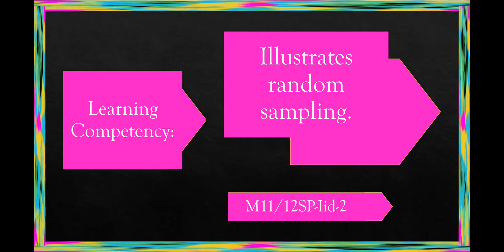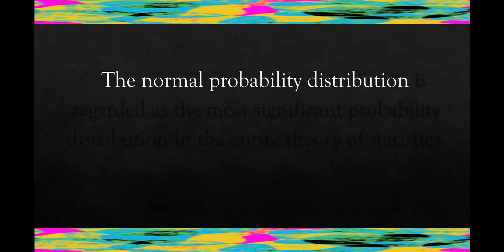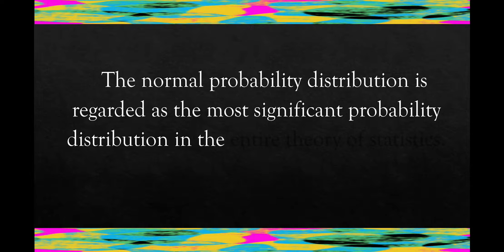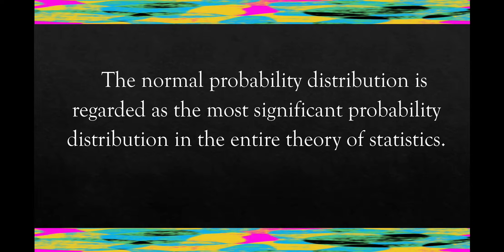In our previous lesson, you have learned that the normal probability distribution is graphically represented by a symmetrical bell-shaped curve known as the normal curve, whose shape is determined by its mean and standard deviation. The normal probability distribution is regarded as the most significant probability distribution in the entire theory of statistics.